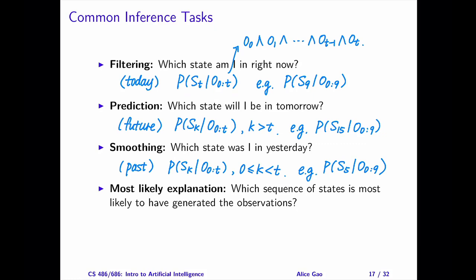For example, we may want to estimate the probability of being in a state on day 5 given the observations from day 0 to 9.